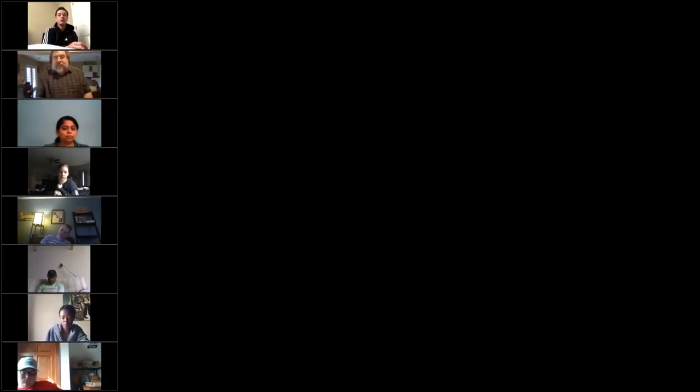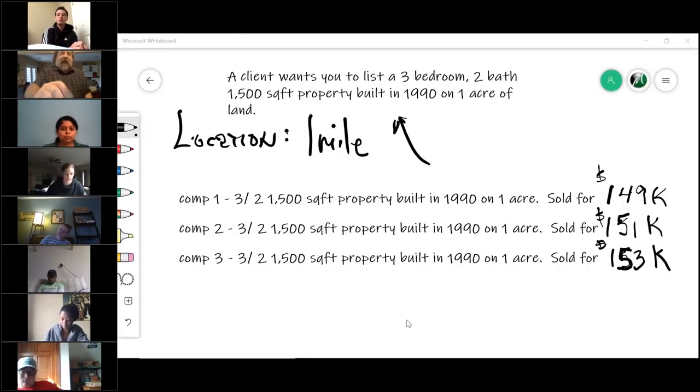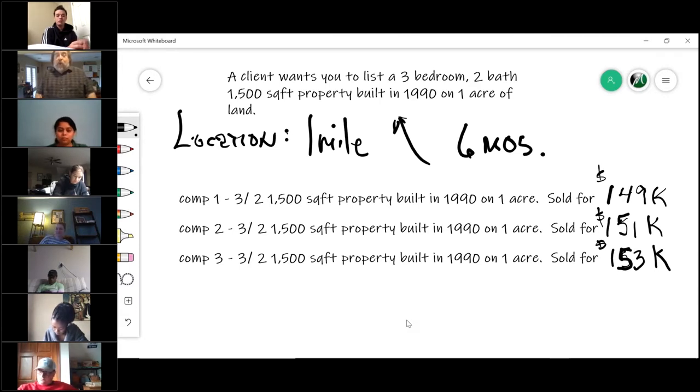So let's go back. One mile is typically the accepted location. Time frame is typically within the last six months—could be more, could be less, depends on how the market's going. One of the favorite things I love to ask my new agents is: when pulling comps, which house is more important, the house that sold two years ago right beside your listing or the house a half a mile away that sold yesterday?